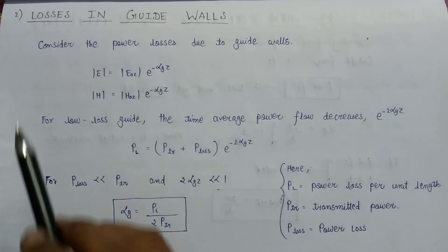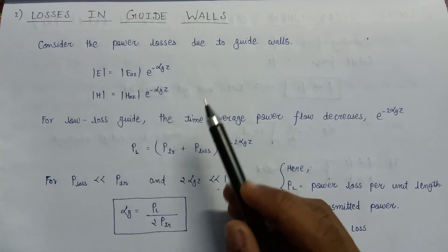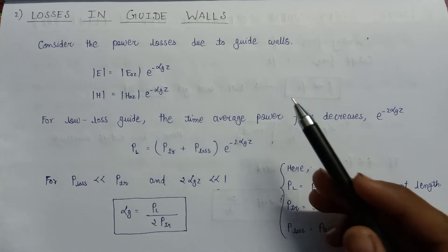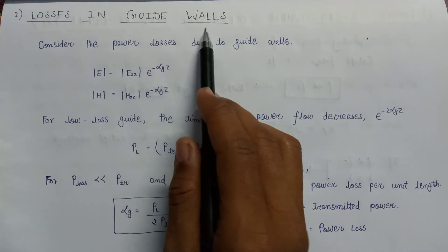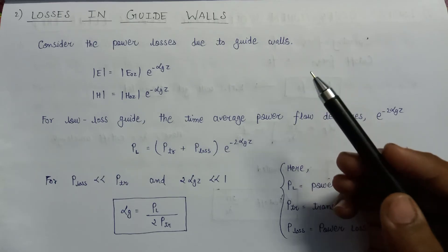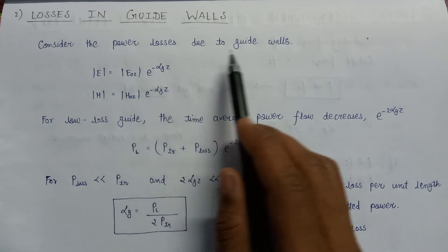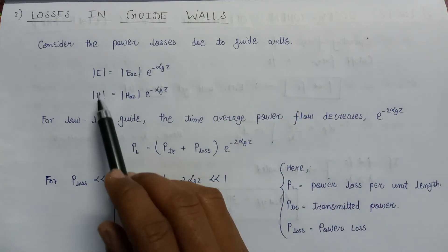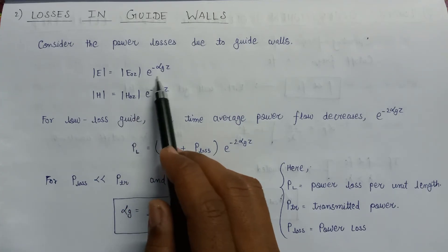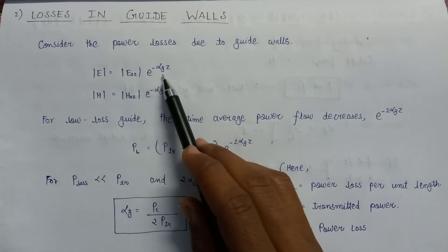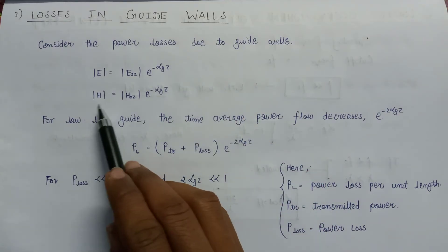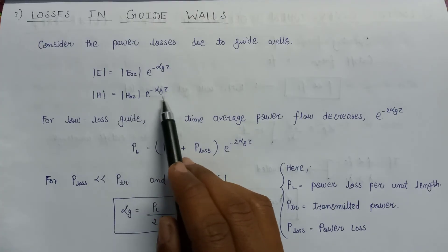Now let us discuss the second type of losses — losses in guide walls. Whenever the wave is propagating inside the rectangular waveguide, there are some losses associated with its walls. These guide wall losses allow us to measure the attenuation constant. In terms of the electric field, it is represented as |E| * e^(-alpha_g * z), and in terms of the magnetic field it is |H| * e^(-alpha_g * z), where alpha_g is the attenuation constant due to waveguide wall losses.